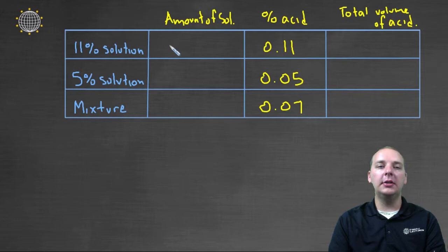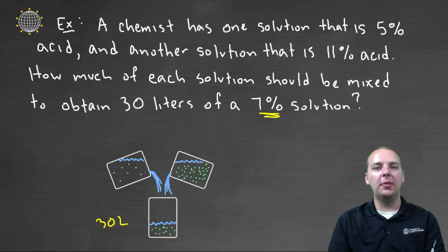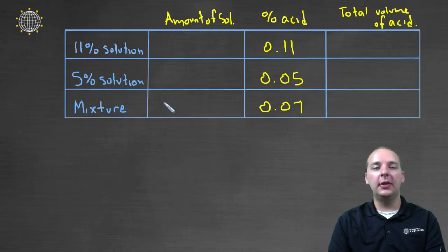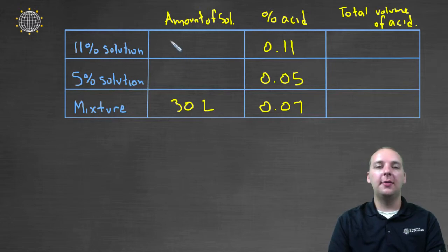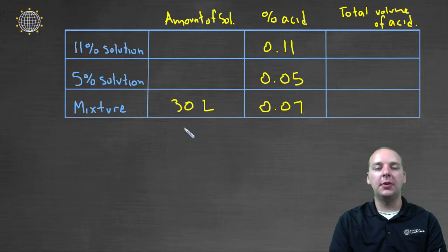Now, how much of the mixture is eleven percent solution or five percent solution? Reading through the problem, the only quantity given is thirty liters, and that's the total. So I can fill in thirty liters for the mixture. But I don't know if that's fifteen and fifteen, twenty and ten, or twenty-five and five — I don't know the balance that adds up to thirty.